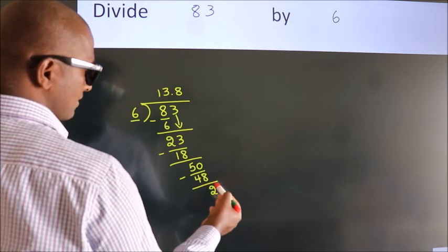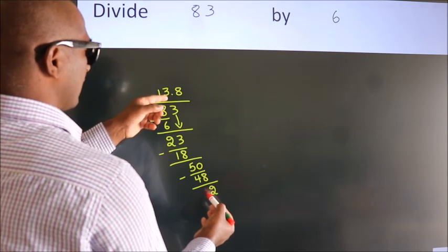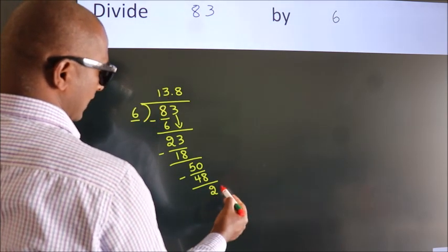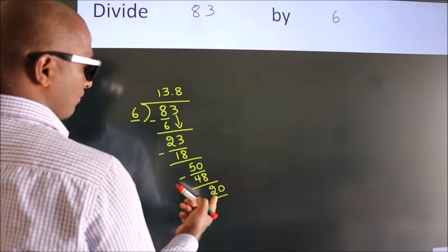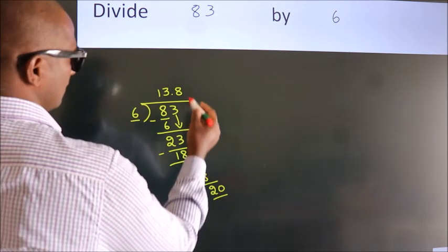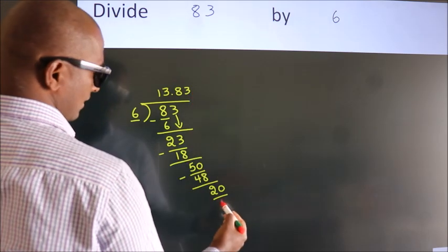After this, we already have the decimal. So, directly take 0. So, 20. A number close to 20 in 6 table is 6 threes, 18.